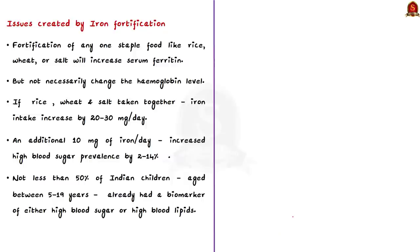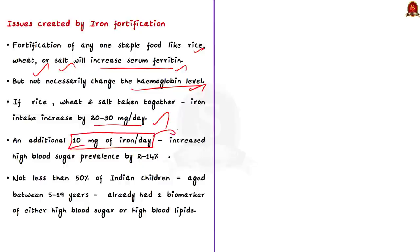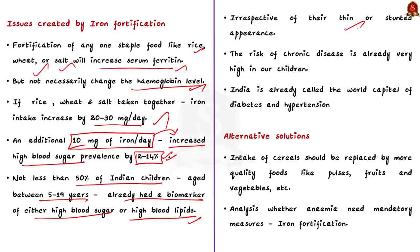Now let us see the issues created by iron fortification. Fortification of one staple food like rice, wheat, or salt will increase serum ferritin but does not necessarily change the hemoglobin level. When all staple foods are fortified together, the increased iron intake could be 20 to 30 milligrams per day. The survey found that an additional 10 milligrams of iron per day increased high blood sugar prevalence by 2 to 14 percent across states of India, with similar risks in high blood pressure and high lipids. Another published analysis of the National Survey showed that not less than 50% of Indian children aged 5 to 19 years already have a biomarker of either high blood sugar or high blood lipids, irrespective of thin or stunted appearance. Thus the risk of chronic disease is already high in our children, and India is already called the world capital of diabetes and hypertension.